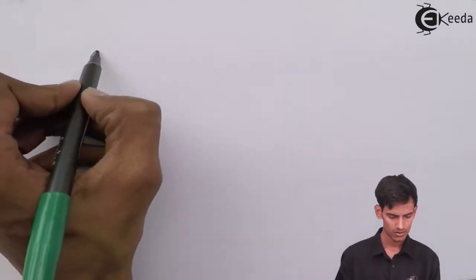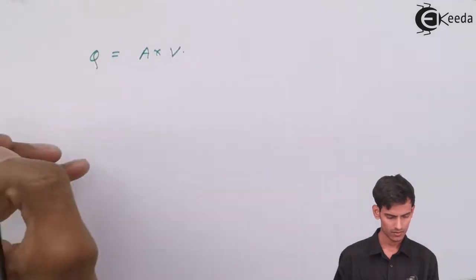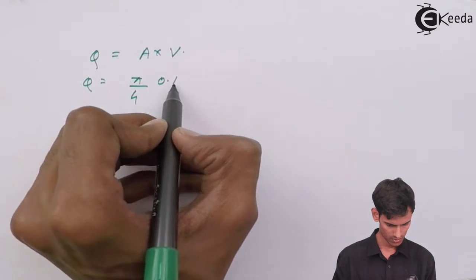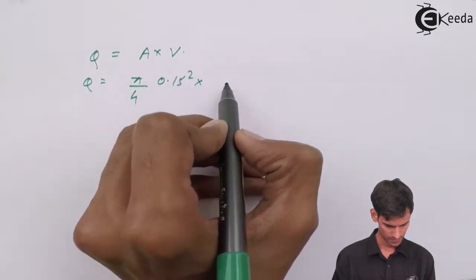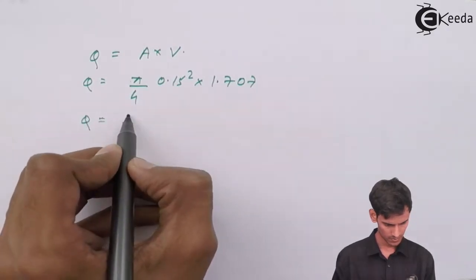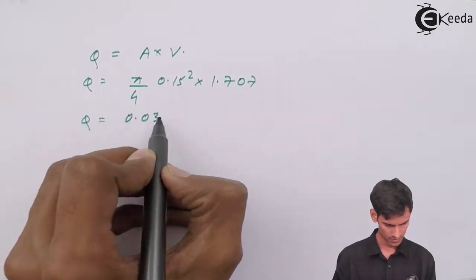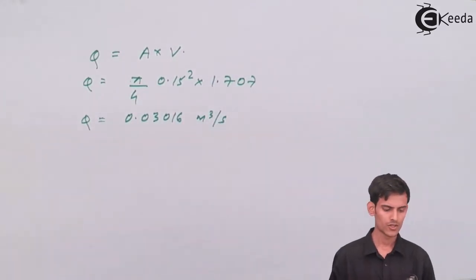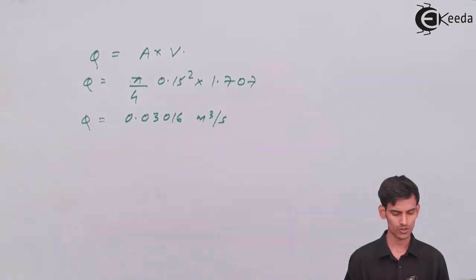Now after you get the velocity, simply multiply the velocity by area to get the value of discharge. The discharge comes out to 0.03016 meter cube per second.